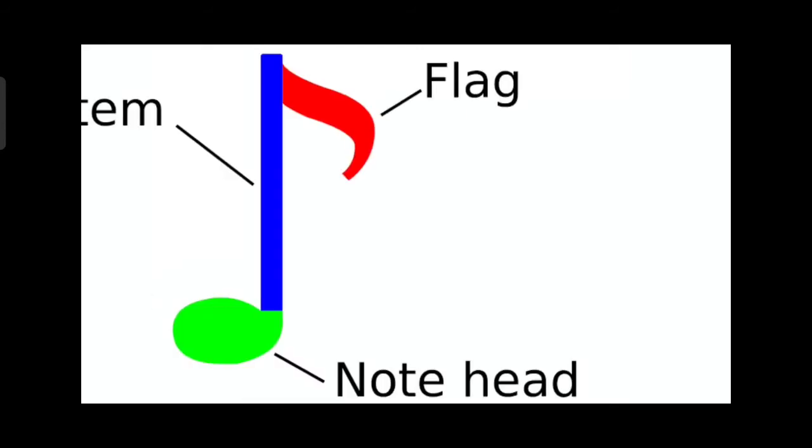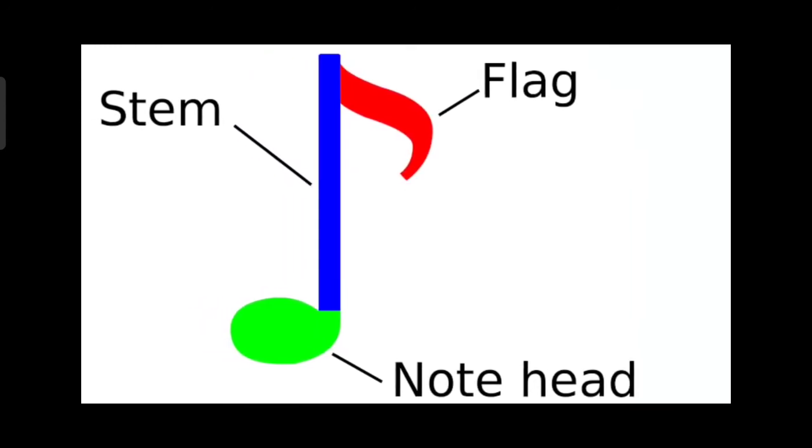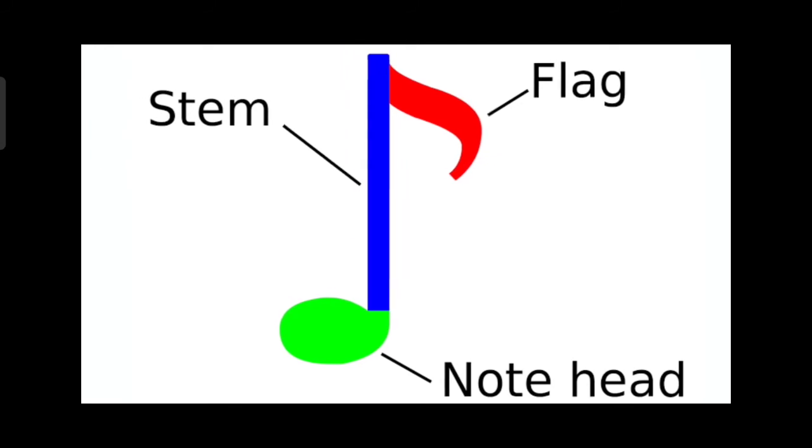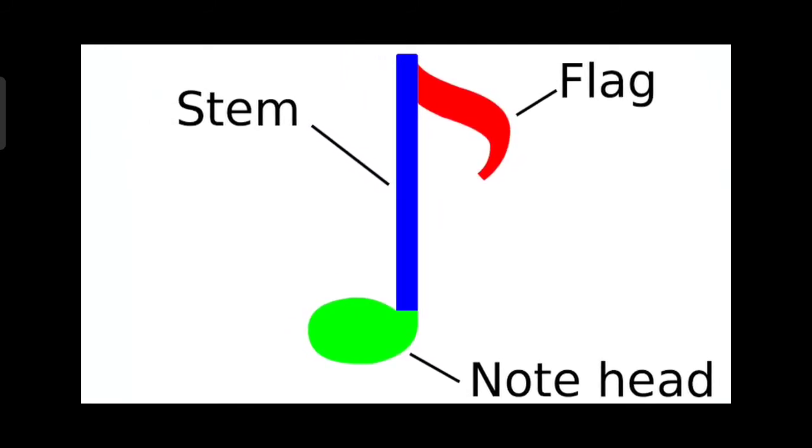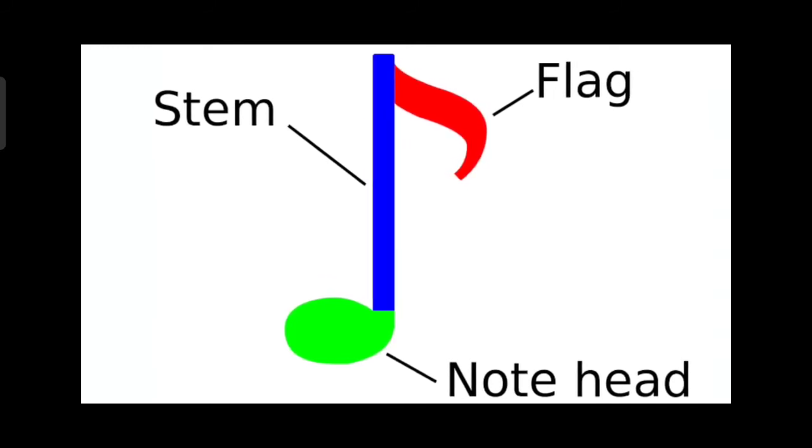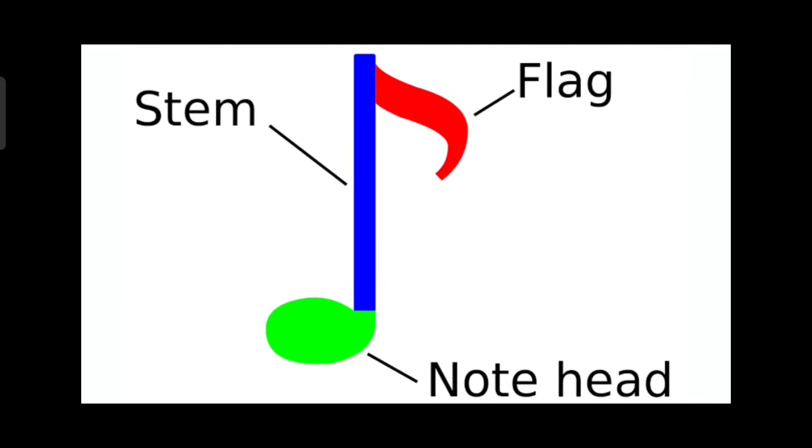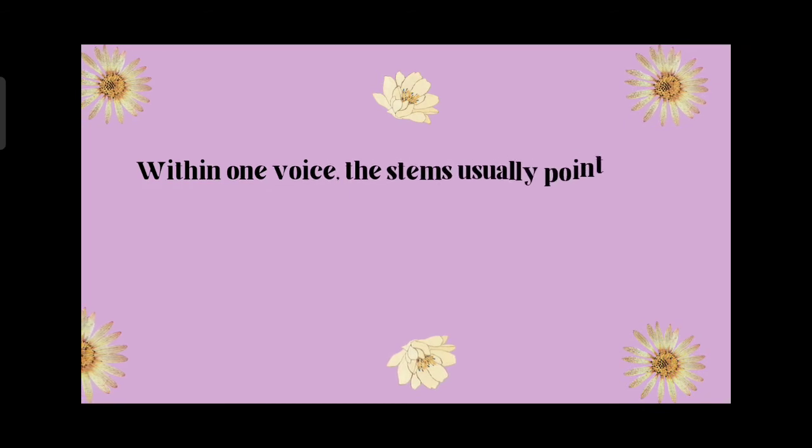A note has how many parts? Three parts. The green part is the note head, then we have the stem, and also a flag. We call it a flag or a tail. The blue is the stem, the red is the flag. Not all have flags, so take note of that. Some notes do not have flags and some notes do not have stems.